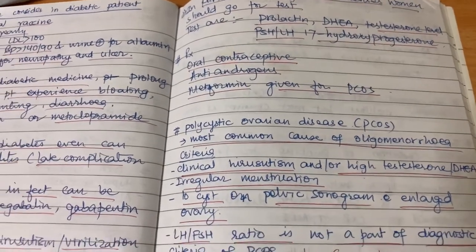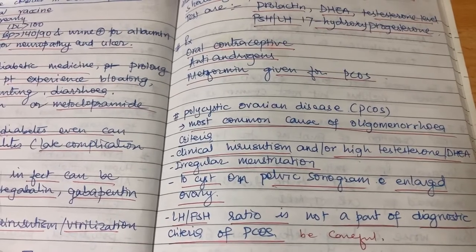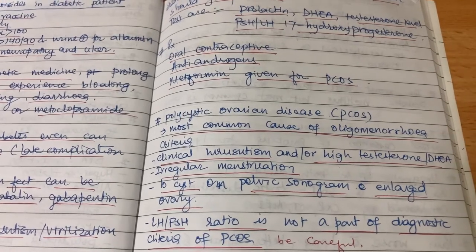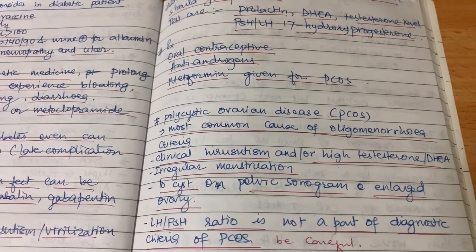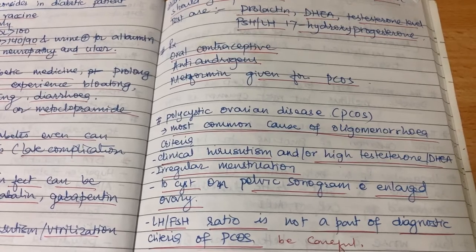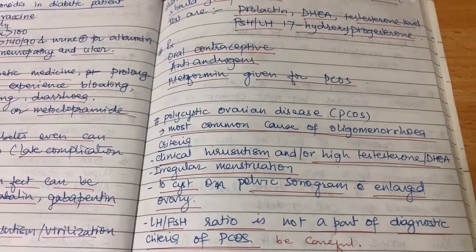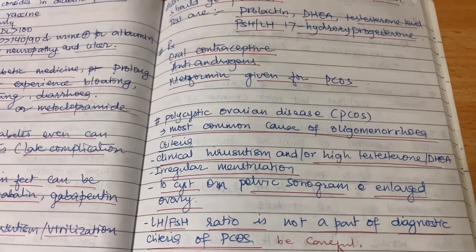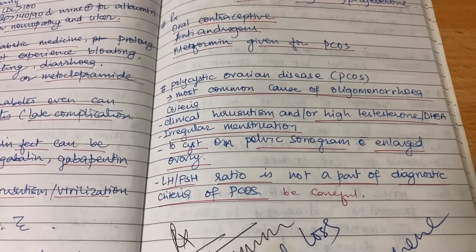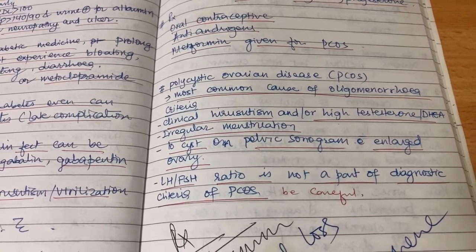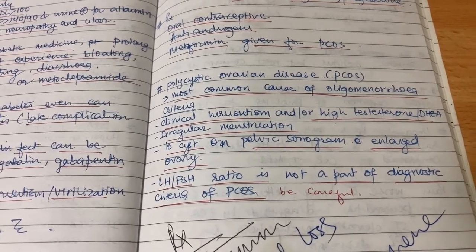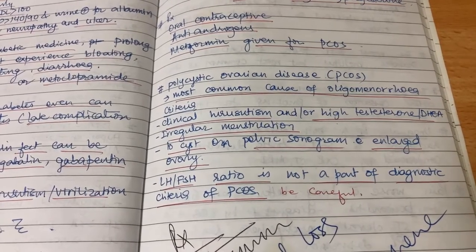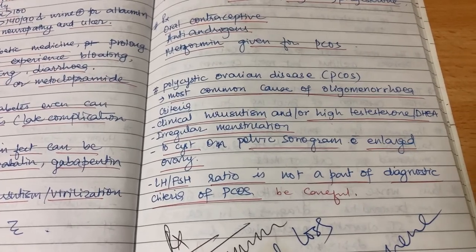PCOS, or polycystic ovarian disease, is the most common cause of oligomenorrhea. The diagnostic criteria are: clinical hirsutism and/or high testosterone/DHEA, irregular menstruation, and 10 or more cysts on pelvic sonogram with enlarged ovary. Note: LH/FSH ratio is not part of the diagnostic criteria for PCOS — be careful in options if LH/FSH ratio is given, exclude that option.